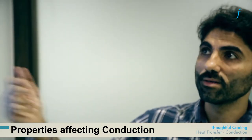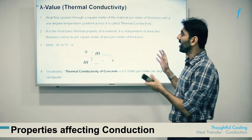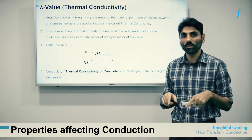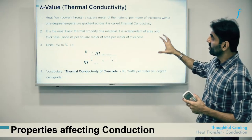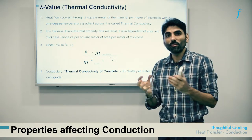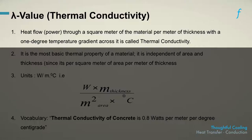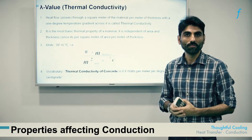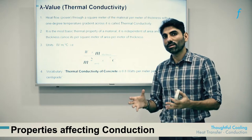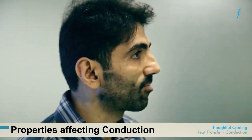Thermal conductivity is defined as the amount of heat flowing through one square meter of a material per meter thickness with a one-degree temperature gradient across the surface. It can be thought of as an intensive property, meaning that irrespective of the quantity of the material, this property would not change — similar to how the density of a material is not dependent on the quantity of the material.